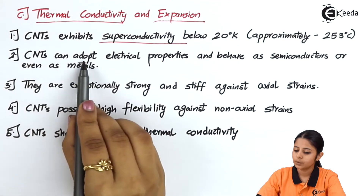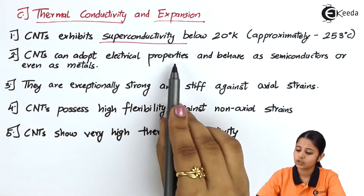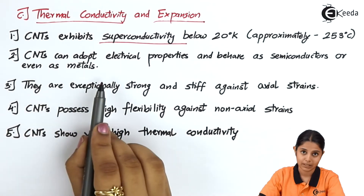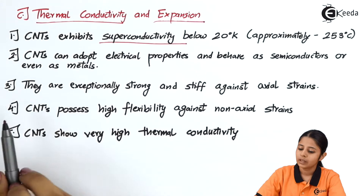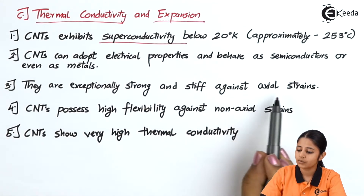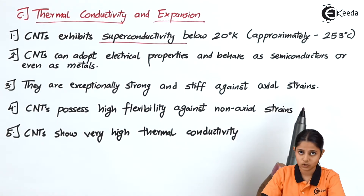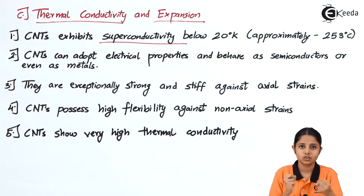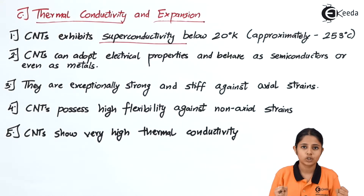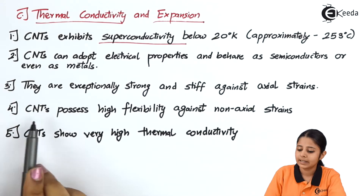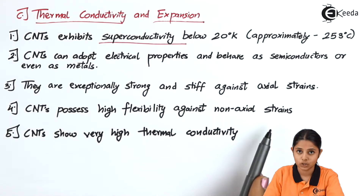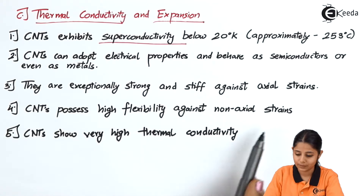Carbon nanotubes can adopt electrical properties and behave like semiconductors or even as metals. They are exceptionally strong and stiff against axial strains — physical strains that try to stretch or break them. CNTs also possess high flexibility against non-axial strains.